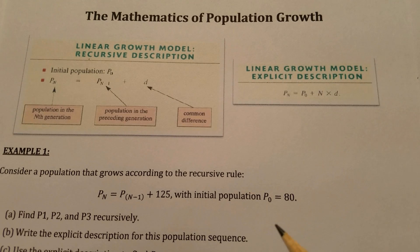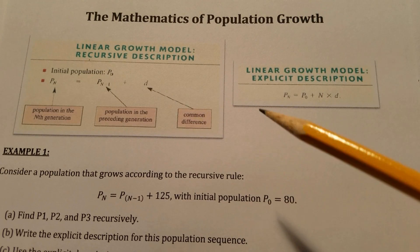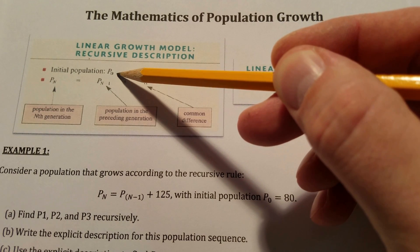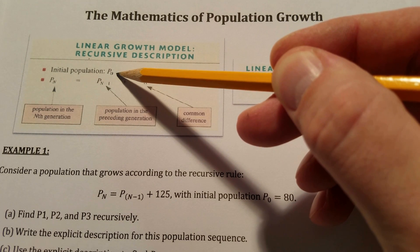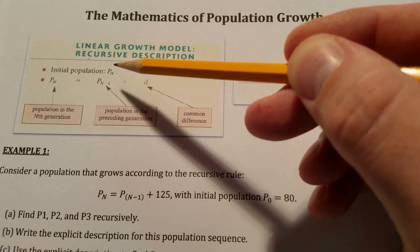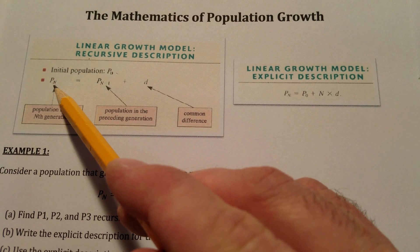Take note that the recursive definition is a two-step method. First, we must know a previous generation's population. In this description, they're telling us P₀, the generation zero population, and to find subsequent populations P_n,